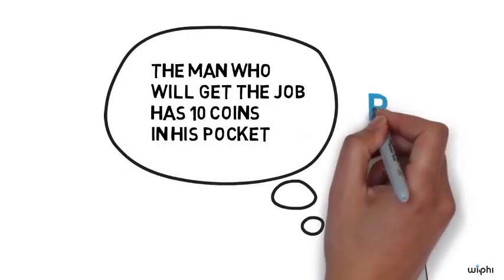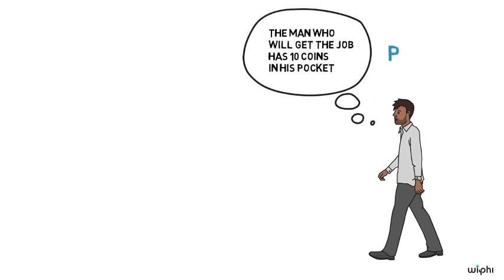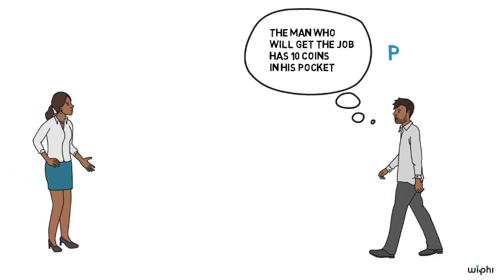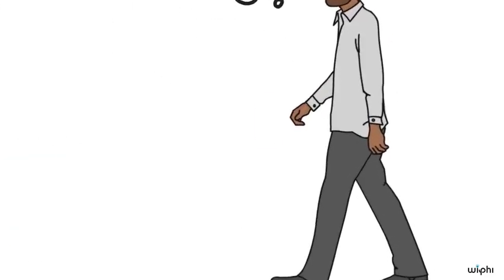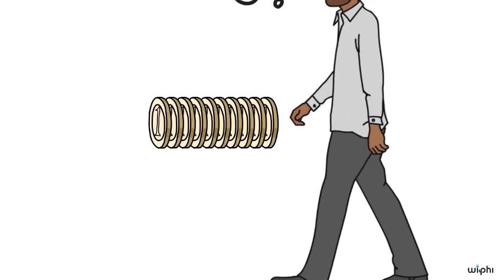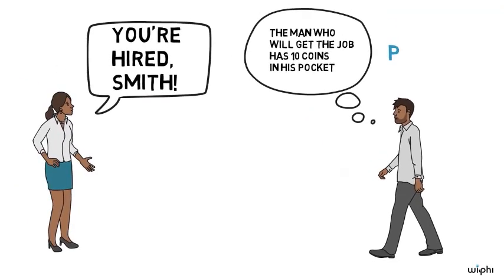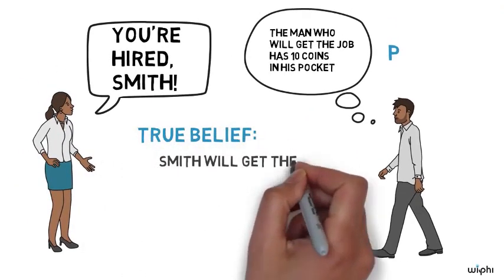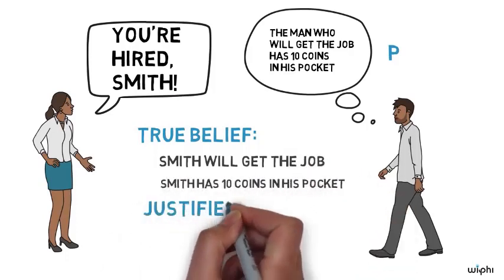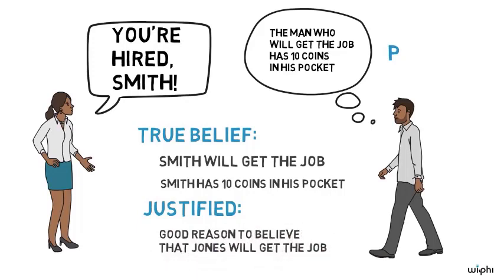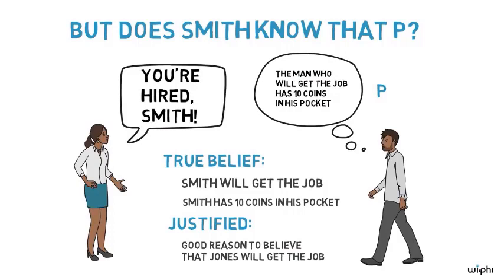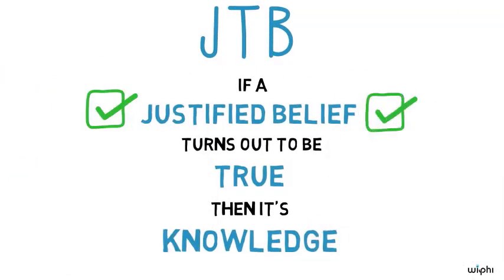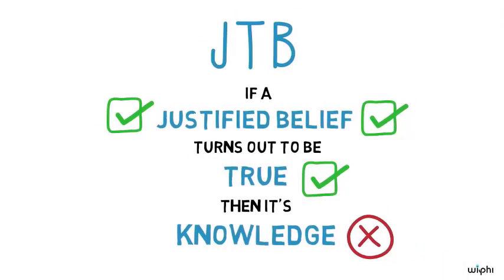And that's our key proposition, P. Right now it might seem that Smith even knows that P — knows that the man who will get the job has 10 coins in his pocket. But there's a twist: for some reason, at the last minute, the company ends up hiring Smith, not Jones. And unbeknownst to Smith, he happens to have 10 coins in his pocket as well. So when Smith believes that the man who will get the job has 10 coins in his pocket, what he believes is true, because Smith will get the job and Smith has 10 coins in his pocket. It's also justified, because Smith has good reasons for thinking that Jones will get the job and that Jones has 10 coins in his pocket. But does Smith actually know that the man who will get the job has 10 coins in his pocket? It seems not. Smith is wrong about who will get the job and doesn't know how many coins are in his own pocket. If Smith has a justified, true belief in our key proposition but doesn't know it, then the JTB analysis is wrong.